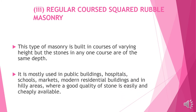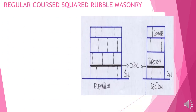Regular course square rubble masonry is mostly used in public buildings, hospitals, schools, markets, and modern residential buildings in areas where good quality stone is easily and cheaply available. The images show where the thorough and bonder have been fixed — the elevation and section are both illustrated, showing thoroughs and bonders clearly.